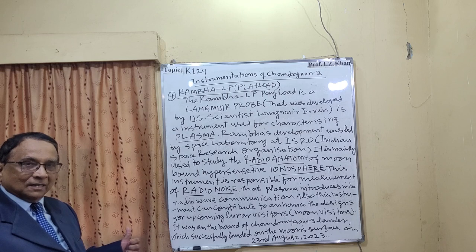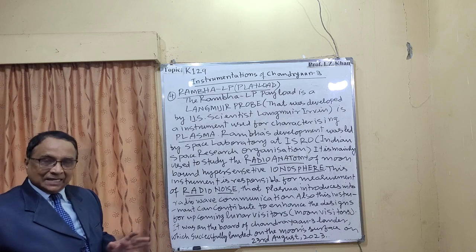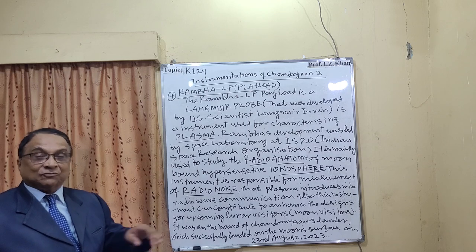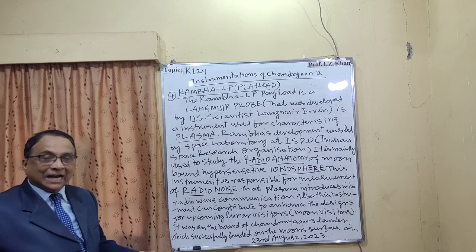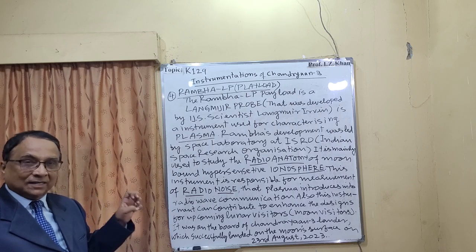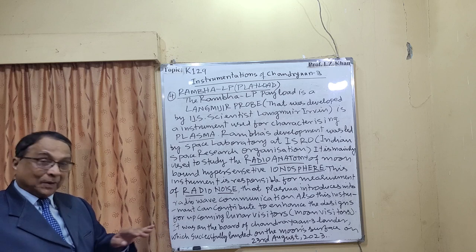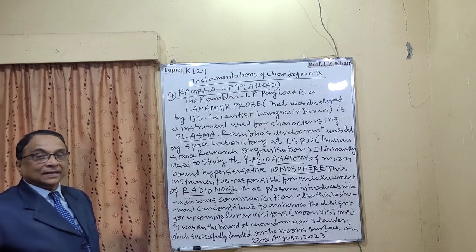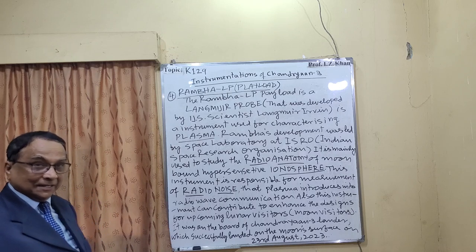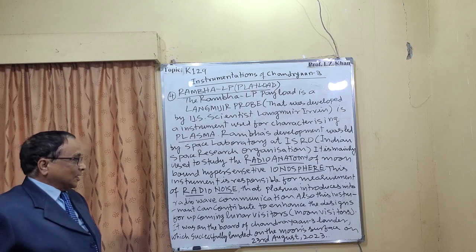Plasma induces radio noise into radio wave communication. If the density of ions in plasma form is more, the noise will be more, and it will not be good for communication. On the moon and in its orbit, scientists are studying the plasma status, the solar heat, how plasma is forming, and what the intensity and density of those ions is — all of which relates to radio noise and its effect on communication.